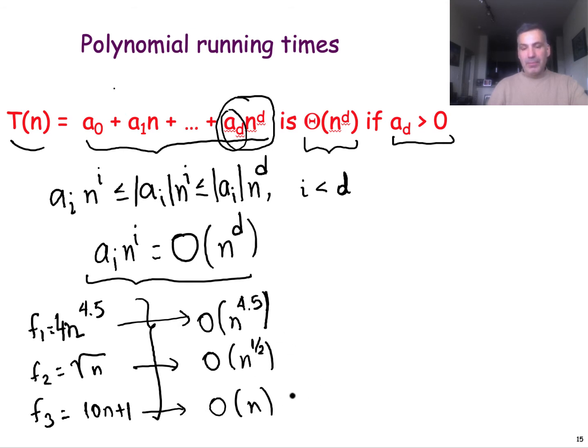Ordering these functions is equivalent with ordering their exponents. You would say that the function f2 is the slowest, then we have the linear function, and finally we have this function as the function that grows the fastest.